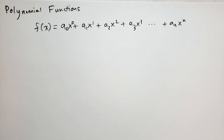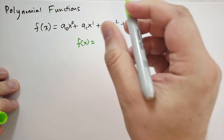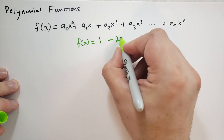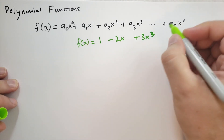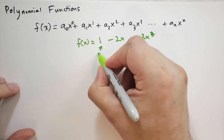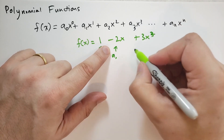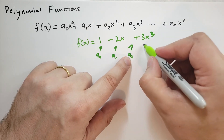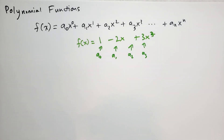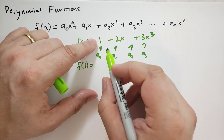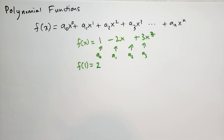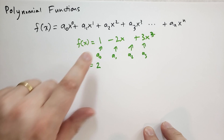As an example of a polynomial function, consider f(x) = 1 − 2x + 3x³. In this case, a₀ = 1, a₁ = −2, a₂ = 0 because there's no x² term, and a₃ = 3. If we evaluate this function at x = 1, we get 1 − 2 + 3 = 2.